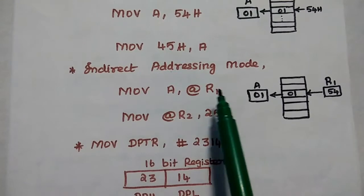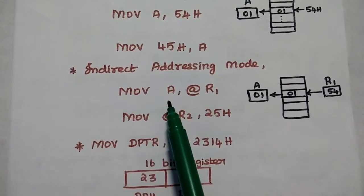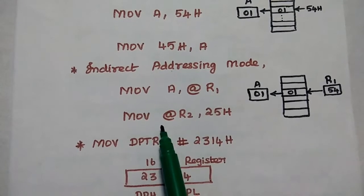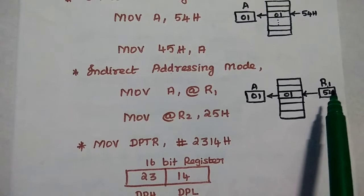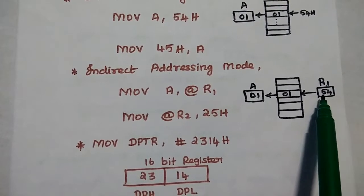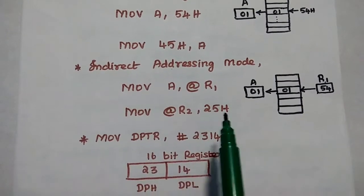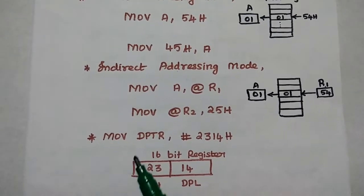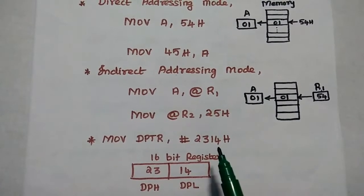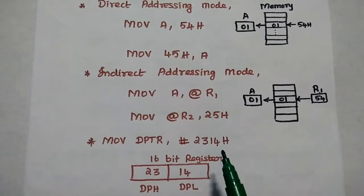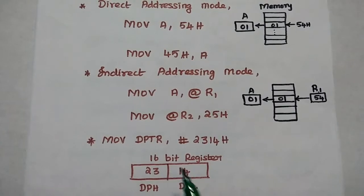For indirect addressing mode, we can consider the examples: MOV A, @R1 and MOV @R2, 25H. Here the R1 register holds the memory location from which we get the content. Next, MOV DPTR, #2314H is an immediate addressing mode where we transfer the 16-bit content into the DPTR register.